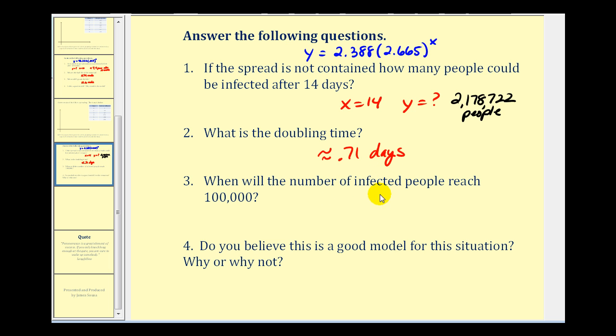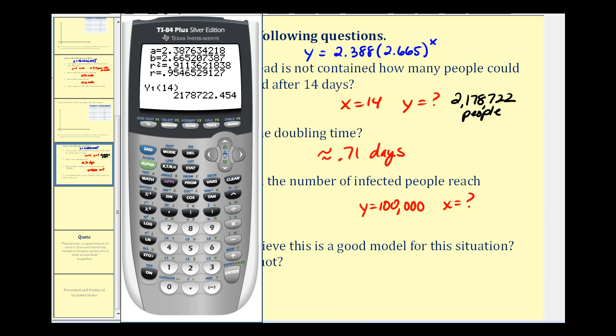Number three, when will the number of infected people reach 100,000? So this question is asking, when y is equal to 100,000, what would the x value be? Let's go back to the calculator. Let's go to our table. Notice that y is equal to 100,000, somewhere between x equals 10 and x equals 11. So let's go ahead and adjust the window so that we can see this point of intersection. So the x max will have to be at least 11, and the y max will have to be at least 100,000.